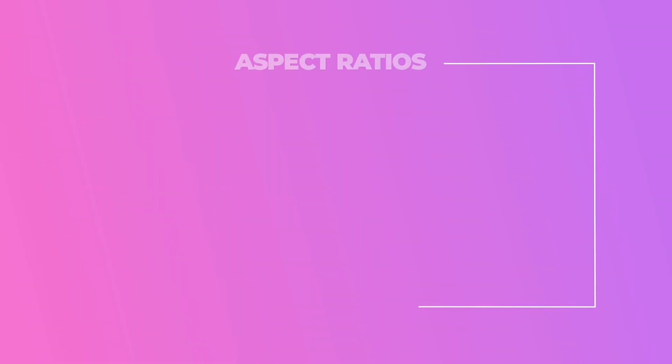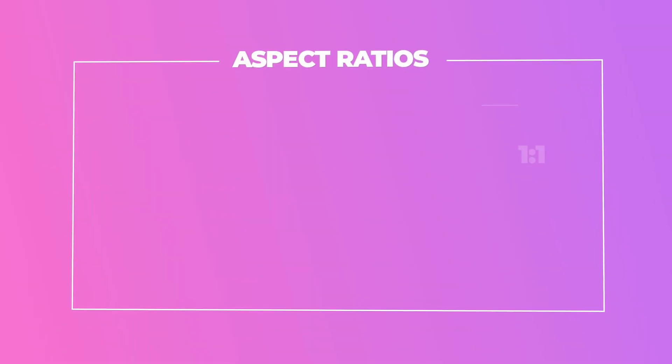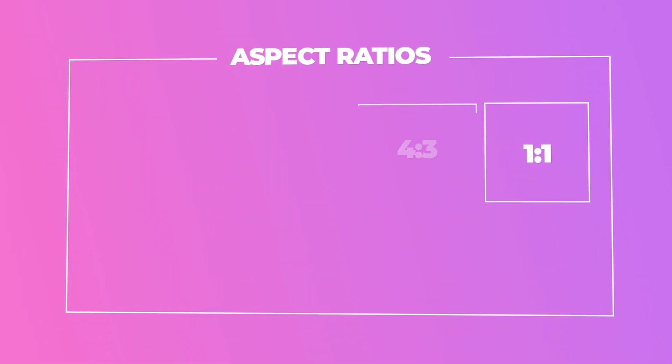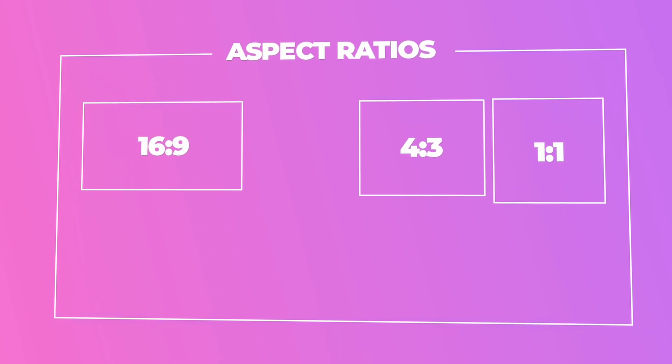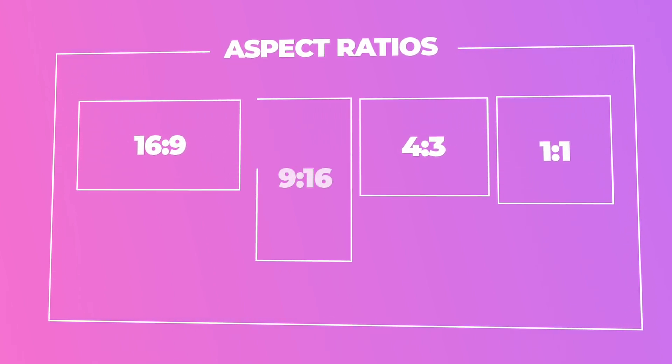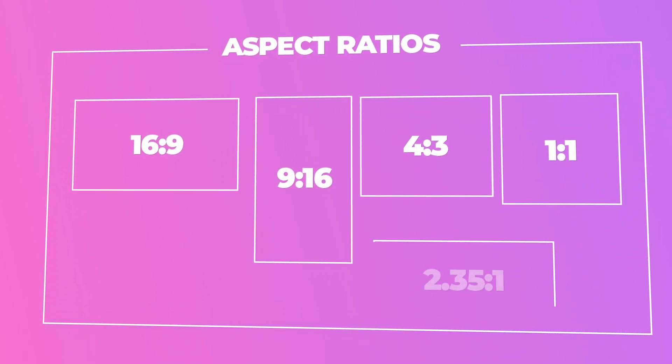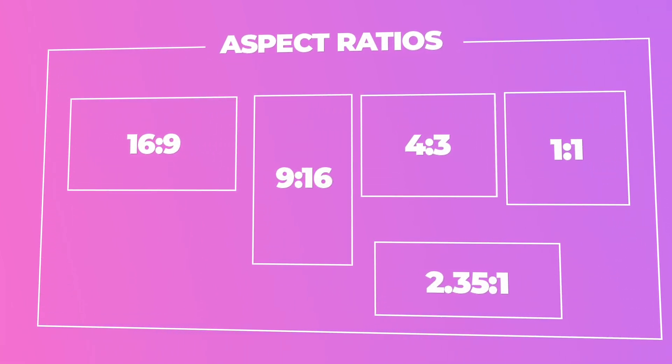The aspect ratio of a video is the width to the height of a video. The most common ones are 1:1, 4:3, 16:9, 9:16, and 2.35:1.